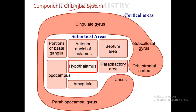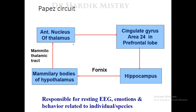The components of the limbic system include cortical areas and subcortical areas. The cortical areas are: orbitofrontal cortex, subcallosal gyrus, cingulate gyrus, parahippocampal gyrus, and uncus. The subcortical areas include: hypothalamus, anterior nuclei of thalamus, amygdala, septum area, para-olfactory area, portions of basal ganglia, and hippocampus.